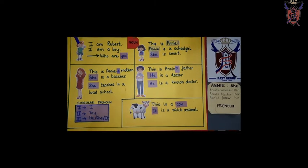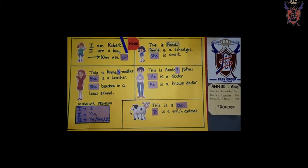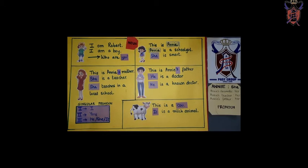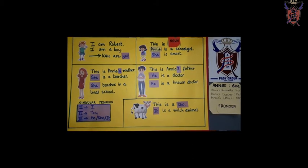Now, Robert wants to make new friends. So, Robert is asking her, Who are you? Who are you? So, this is Annie. This is Annie. Annie is the name of a girl. So, Annie is also a noun.